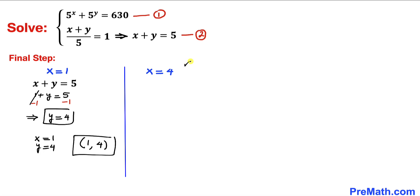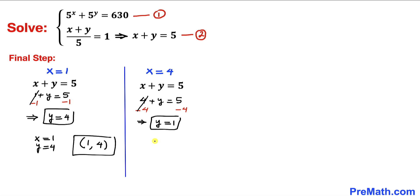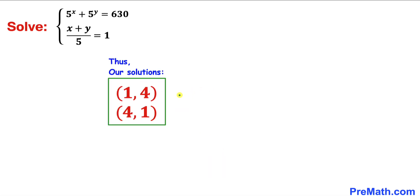For x equals 4: from x plus y equals 5, we get 4 plus y equals 5. Subtracting 4 from both sides gives y equals 1. So our second solution is x equals 4, y equals 1, or simply (4, 1). These are our two solutions. Thanks for watching and please don't forget to subscribe for more exciting videos.